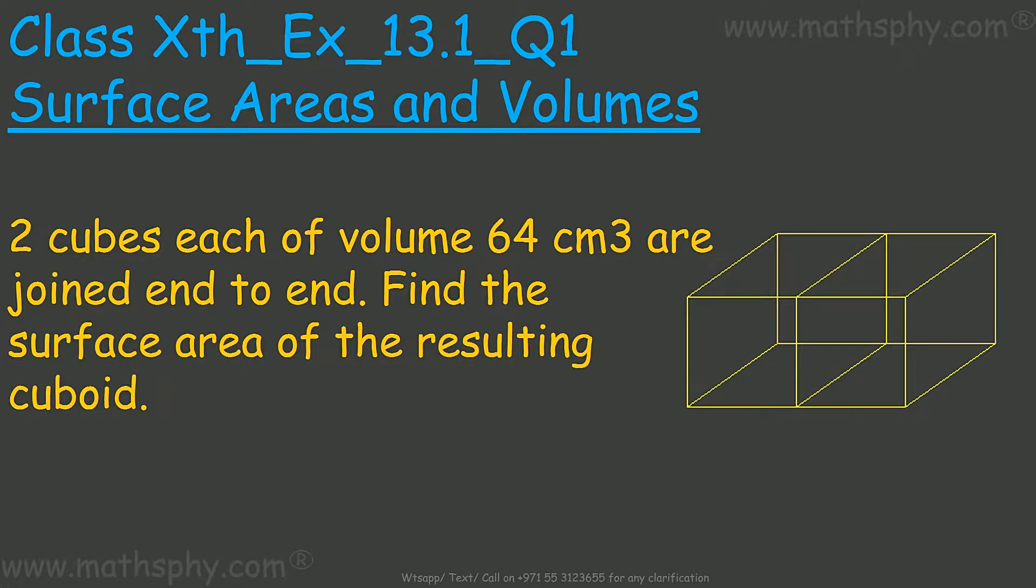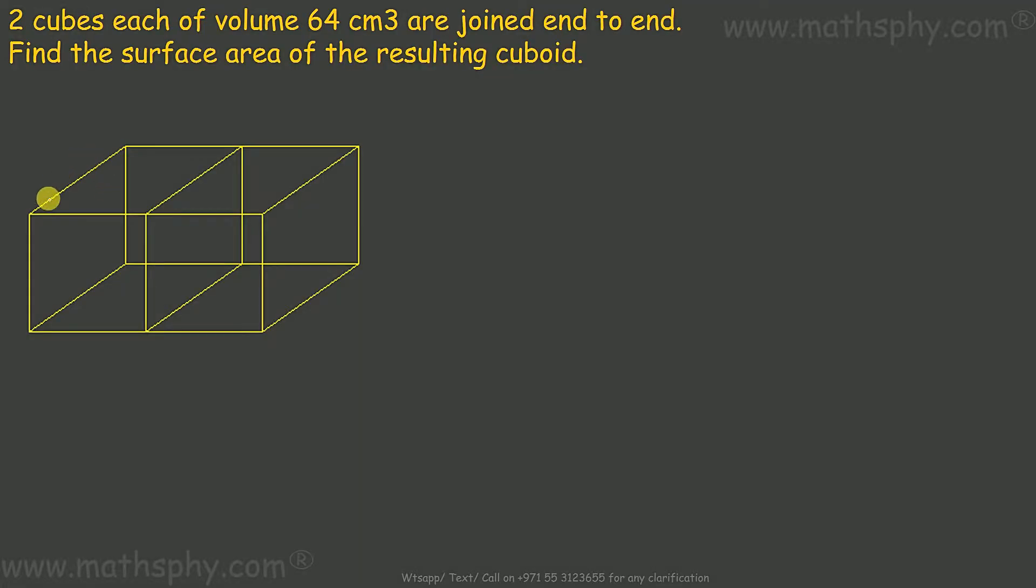Cubes means all the sides are equal. We have this cube and this cube. Two cubes are joined together. We need to know the surface area of the resulting cuboid.